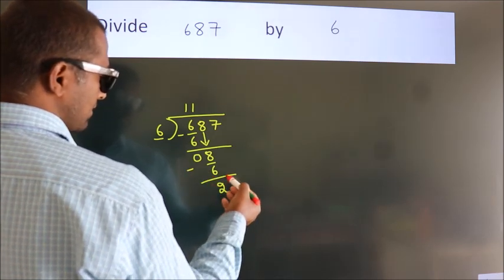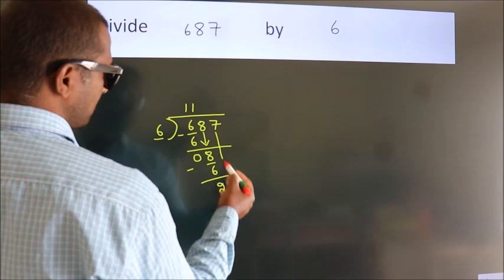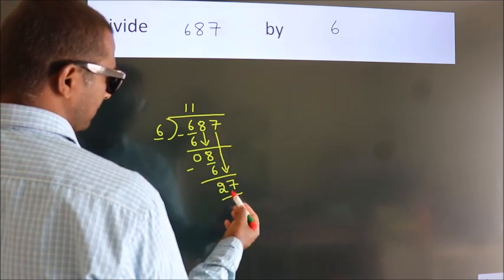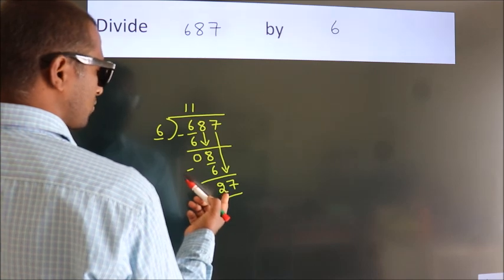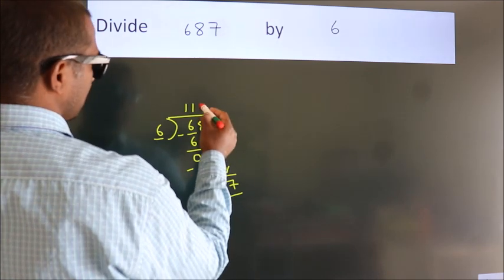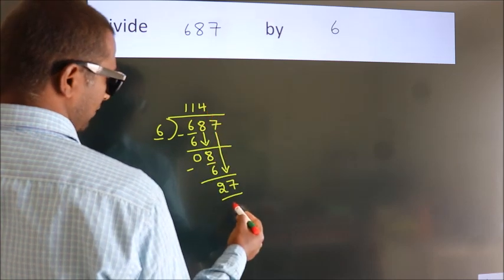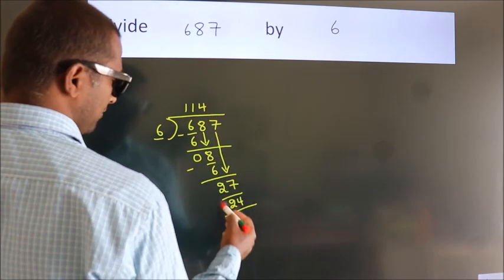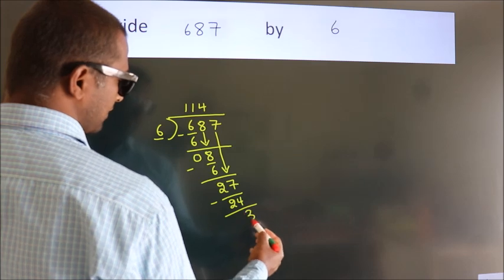After this, bring down the next number. So 7 down. So 27. A number close to 27 in the 6 table is 6 fours, 24. Now we subtract. We get 3.